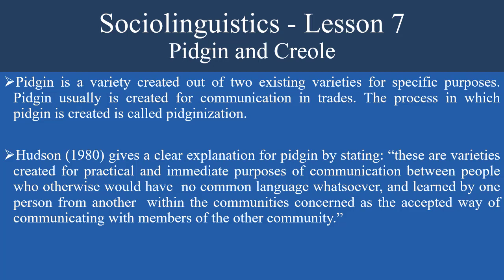Hudson defines pidgin and Creole as varieties created for particular and immediate purposes of communication between people who otherwise would have no communication language whatsoever, and learned by one person from another within the communities concerned as the accepted way of communicating with members of another community. Basically, it is created for practical purposes of communication between people who would otherwise have no common language.